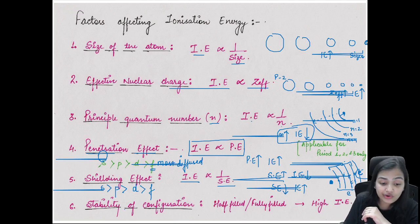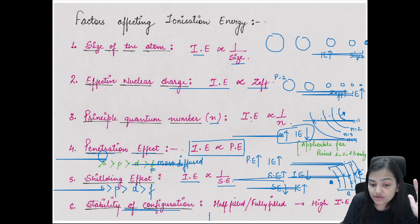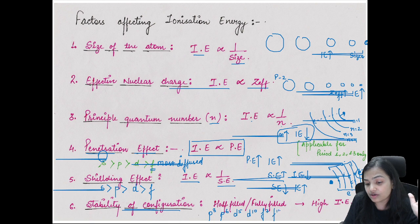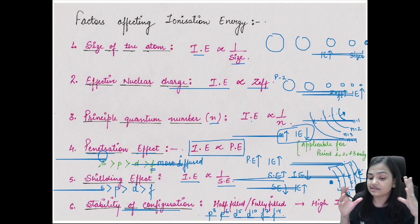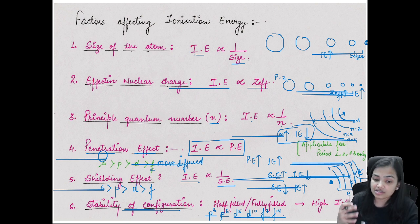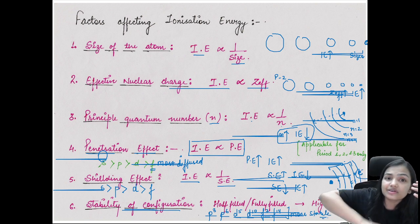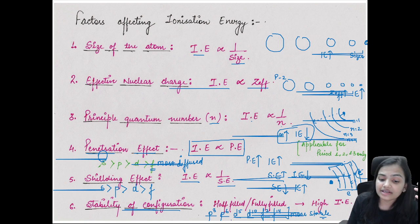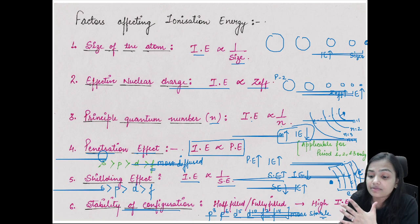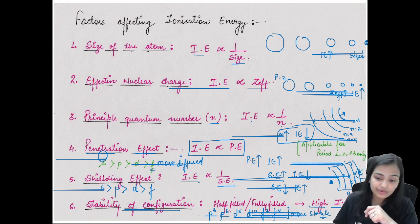The last factor is stability of configuration. Half-filled orbitals (p³, d⁵, f⁷) and fully-filled orbitals (p⁶, d¹⁰, f¹⁴) are degenerate orbitals with the same energy, making them extra stable. When an atom has such extra-stable configurations, it becomes very difficult to remove an electron - ionization energy is very high. This half-filled and fully-filled stability concept applies to p, d, and f orbitals, not s orbitals.